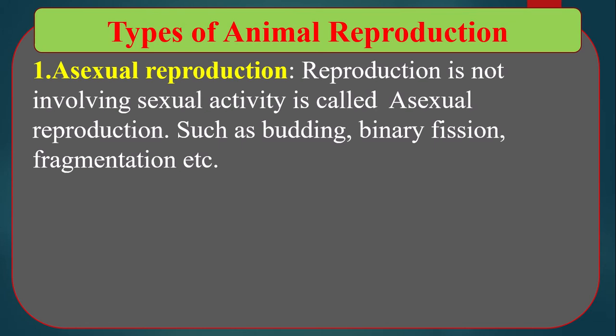Asexual reproduction. What is asexual reproduction? Reproduction not involving sexual activity is called asexual reproduction. Examples include budding, binary fission, fragmentation, etc. Asexual reproduction happens in lower animals.